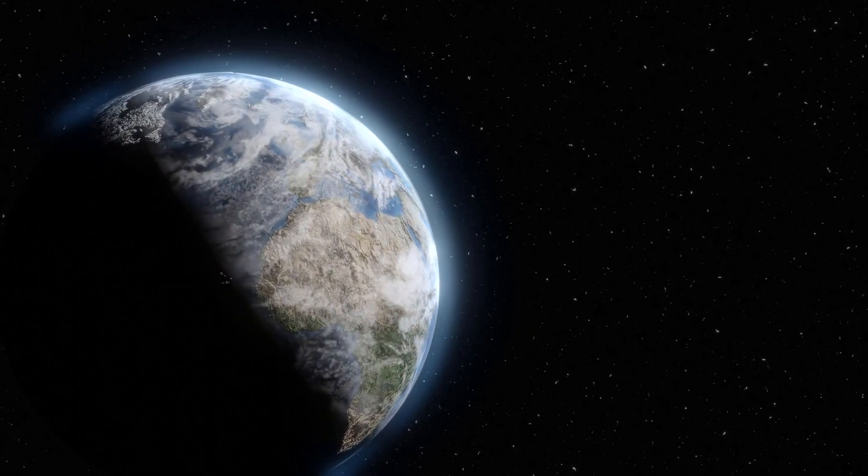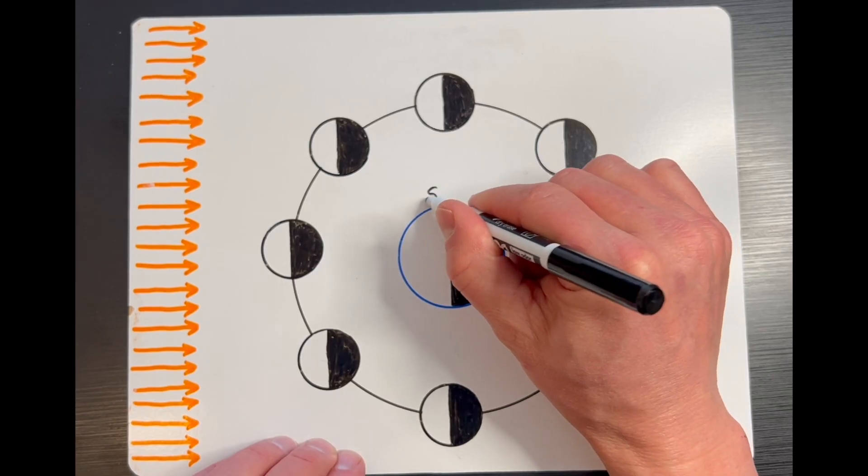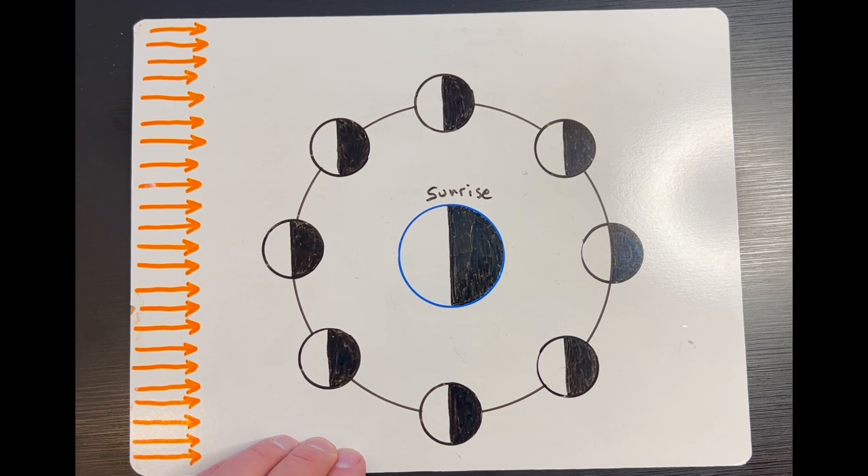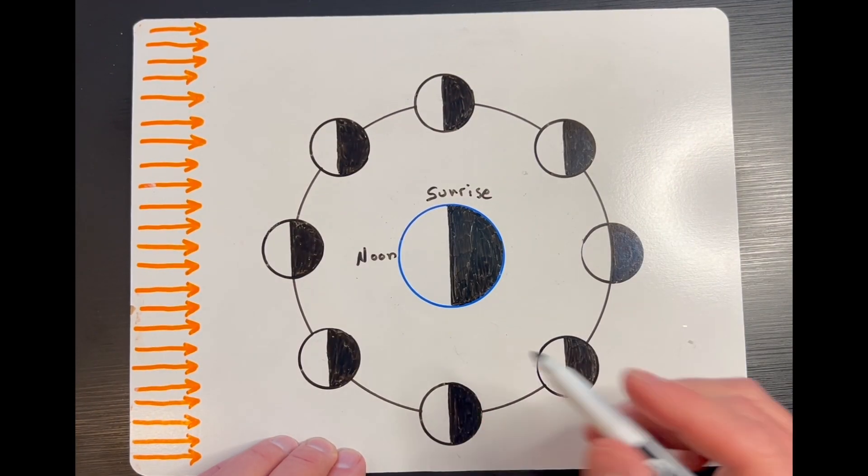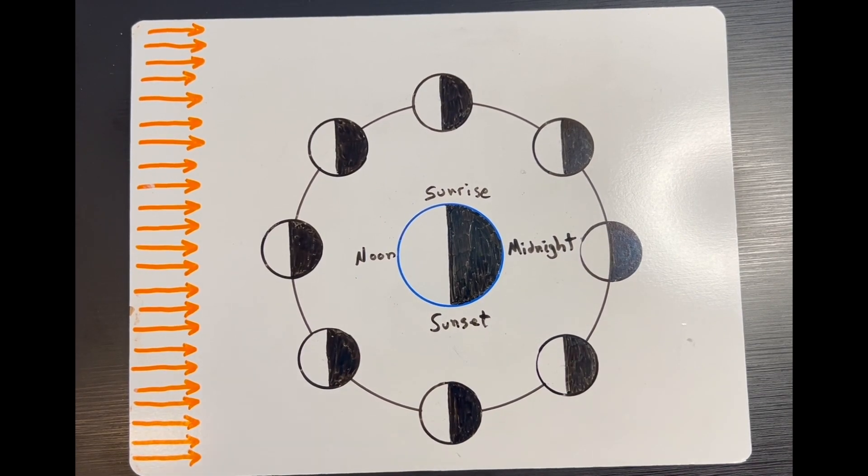The Earth has night and day because it rotates on its axis. And as you go from the night side to the day side, that's sunrise. And when you're facing the sun, that's noon. During standard time, anyway. And then you get to sunset and midnight, all in a 24-hour period.